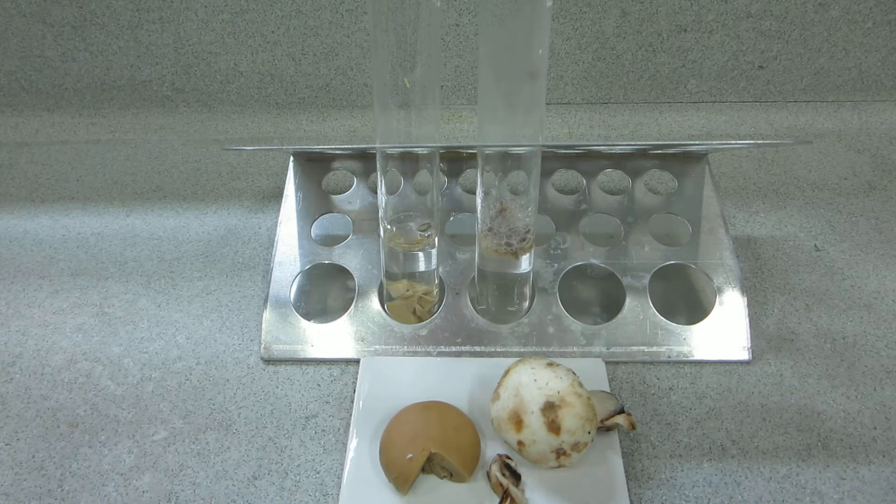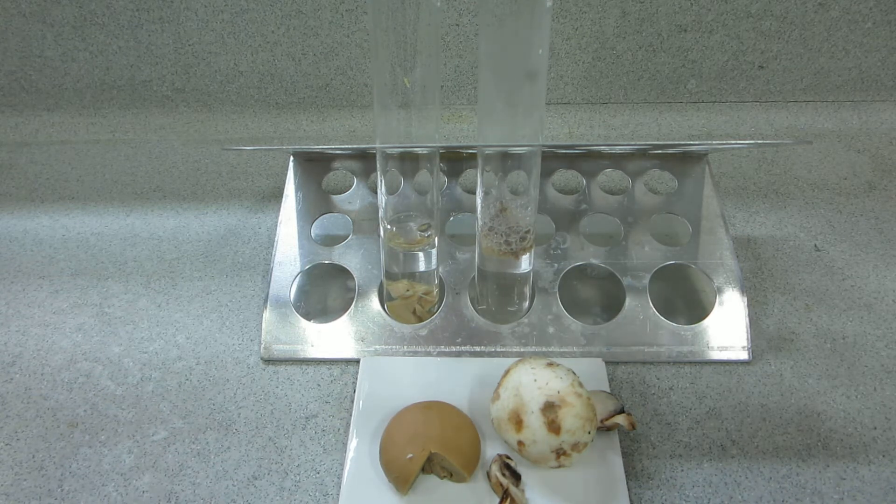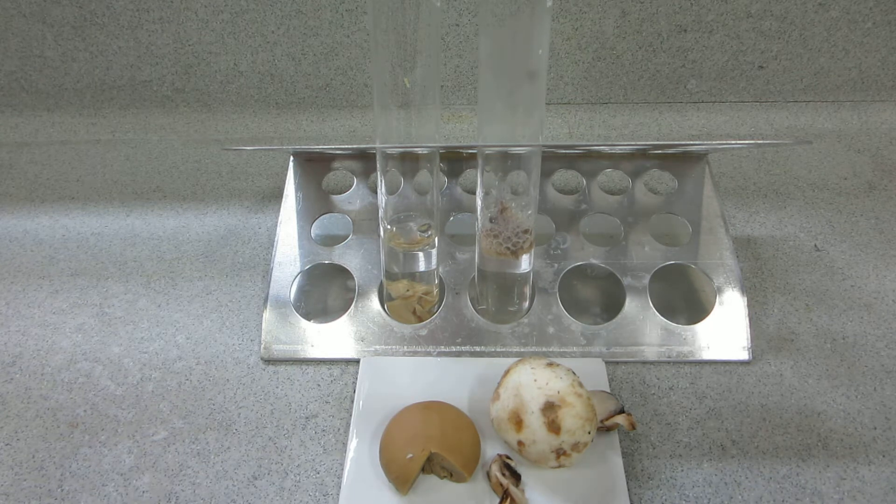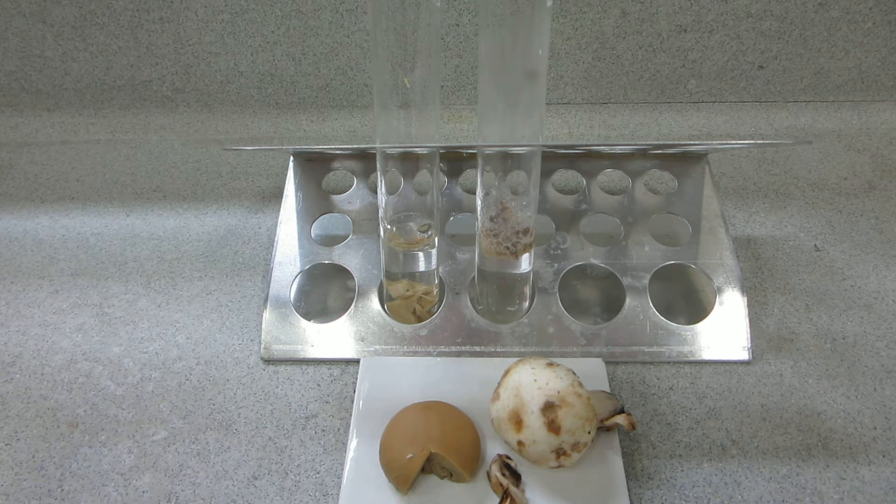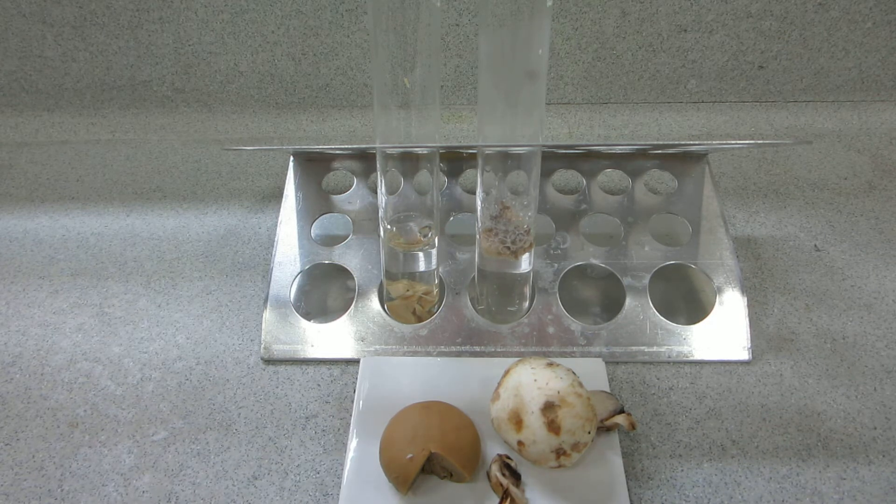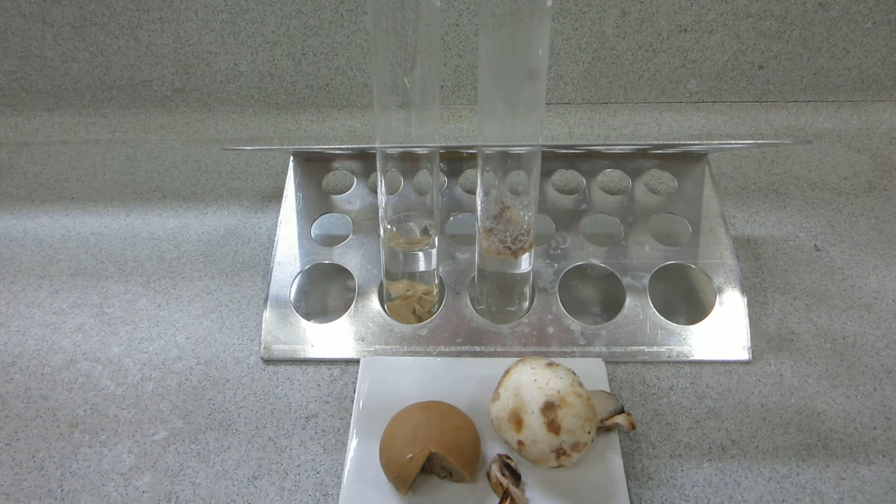So that's quite an interesting example of destruction of an enzyme during the canning in the mushroom, presumably a catalase which catalyzes the decomposition of hydrogen peroxide producing oxygen quite rapidly with the live mushroom.